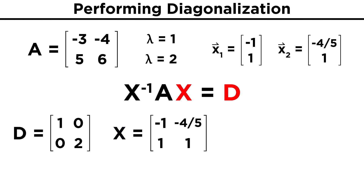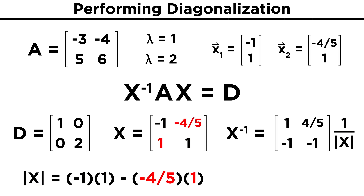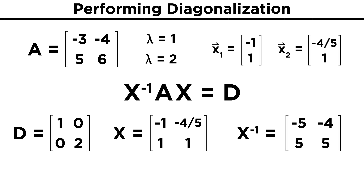We have obtained the main matrices for diagonalizing matrix A. The only remaining piece is the inverse of X. Since X is a two by two matrix, we simply swap the top left and bottom right elements, multiply the off-diagonal elements by negative one, and divide the whole matrix by the determinant. The determinant will be negative one times one, minus negative four fifths times one, which is negative one plus four fifths, which equals negative one fifth. The inverse will therefore be the matrix one, four fifths, negative one, negative one, divided by the determinant negative one fifth, which means we just multiply by negative five, giving us negative five, negative four, five, five.